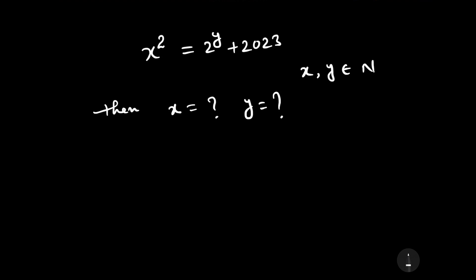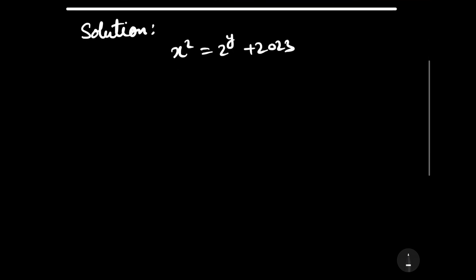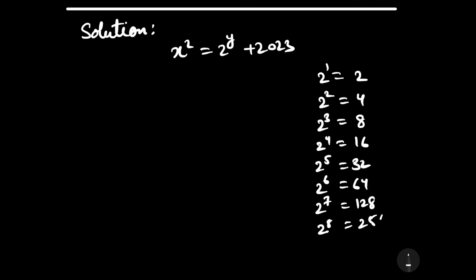Now let us start to solve this question: x² = 2^y + 2023. To solve this, let us look at the different powers of 2: 2¹=2, 2²=4, 2³=8, 2⁴=16, 2⁵=32, 2⁶=64, 2⁷=128, 2⁸=256, 2⁹=512, and 2¹⁰=1024.